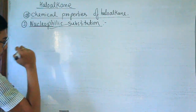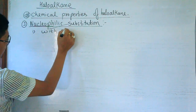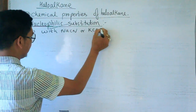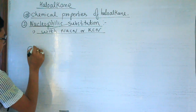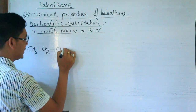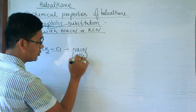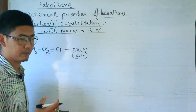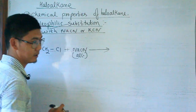For example, in nucleophilic substitution we have the reaction with NaCN — sodium cyanide — or KCN — potassium cyanide. The haloalkane, such as CH₃CH₂Cl, can react with NaCN. This reaction is carried out in alcoholic sodium cyanide solution.